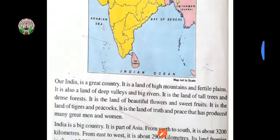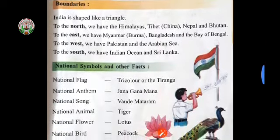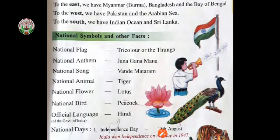Now let's learn about national symbols and other facts. The national flag is the tricolor or the Tiranga. The national anthem is Jana Gana Mana. The national song is Vande Matram. The national animal is the tiger. The national flower is the lotus. The national bird is the peacock. The official language is Hindi. National symbols of a country represent a host of objects that paint a unique identity about the country. The rich heritage of India is a result of assimilation of cultural influences from its invaders through the generations.